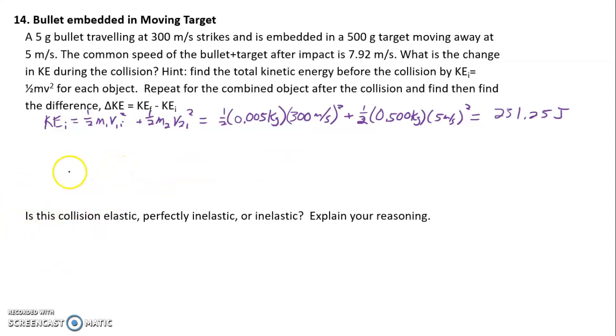And now we're going to calculate the kinetic energy after the collision. So one-half m1 plus m2 times the final velocity squared. Notice I added them together. You could just do them separate like I did in the initial, but the two things are stuck together. So there's really only one thing afterward. And so one-half times 0.505 kilograms times 7.92 meters per second squared. And so we get 15.838 joules.